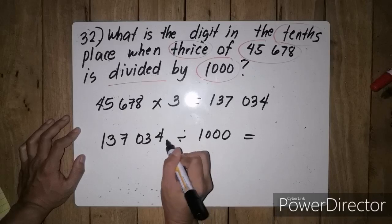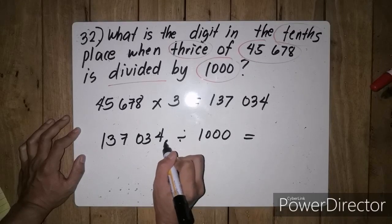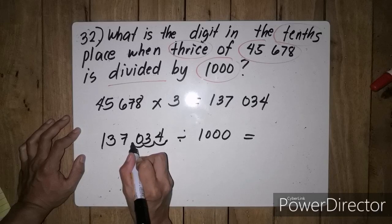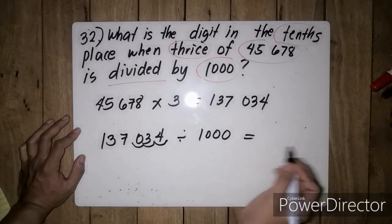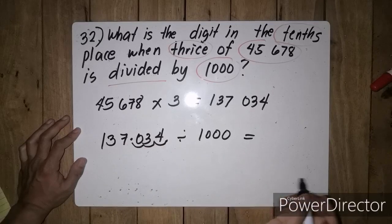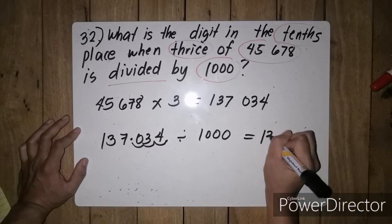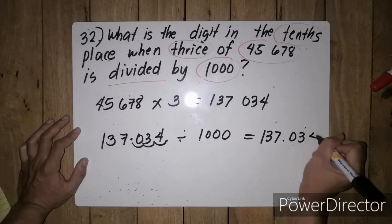Since nagdi-divide tayo, up to here, since 3 yung zero—1, 2, 3—we have dito na mapupunta yung ating decimal. So ang sagot natin ay 137.034.